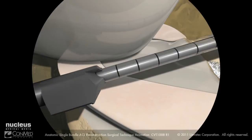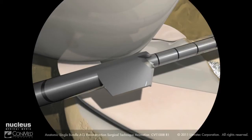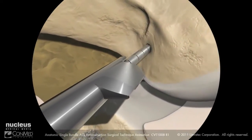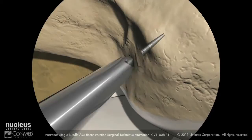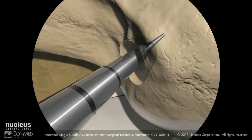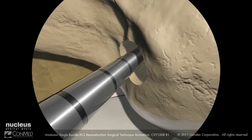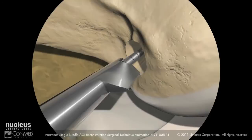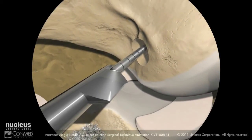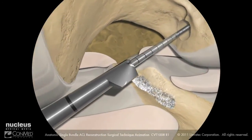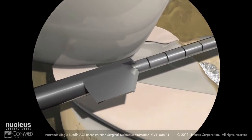Insert the monofluted sentinel drill bit over the guide pin through the accessory anteromedial portal with the cutting edge facing away from the femoral condyle, and advance the drill bit to the femoral ACL footprint. Using a piston-like back-and-forth motion, advance the sentinel drill bit to the desired depth cautiously to prevent blowout of the lateral femoral cortex. Pull the drill bit back slowly until the blade is visible in the joint space. Keeping the hand off the trigger, slide the sentinel drill bit past the medial femoral condyle and out of the portal, making sure to keep the blade oriented away from the condylar surface.